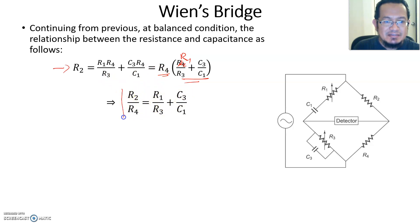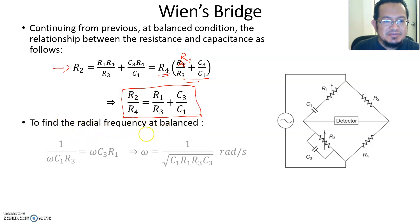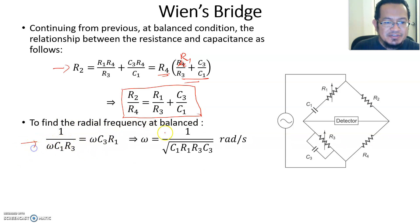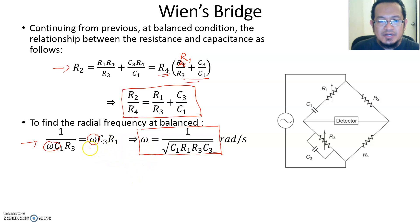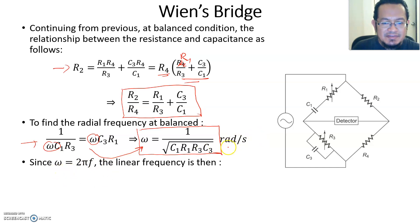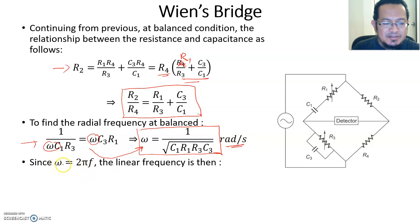To find the radial frequency at balance, we take the previous equation and solve for omega. Multiplying out and factoring out omega gives the expression for angular frequency. This is rated in radians per second. If you want to find frequency in hertz, use the relationship ω = 2πf, meaning f = ω/(2π), and substitute back to get the linear frequency with the unit in hertz.